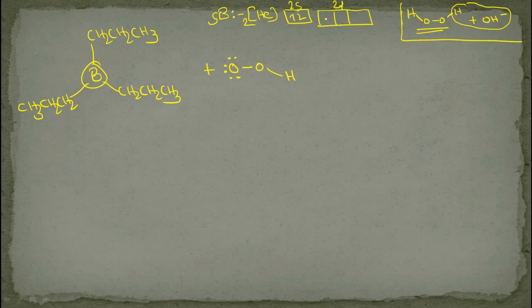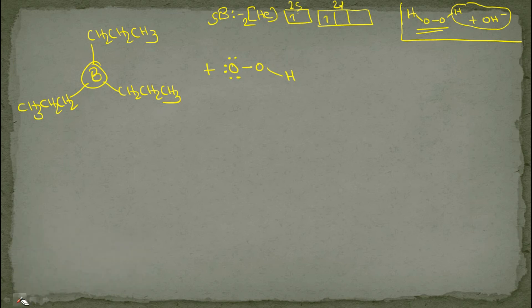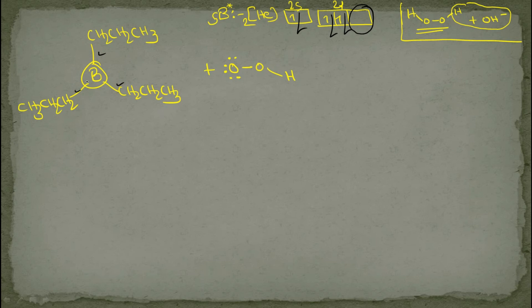Boron's atomic number is 5, with configuration 2 and 2P1. In the excited state, one electron is transferred, allowing boron to form 3 bonds. However, one orbital remains empty. That's why whenever boron makes 3 bonds it has a tendency to make a 4th bond by accepting a lone pair, since one full orbital is empty.